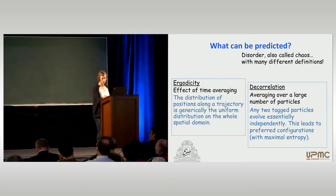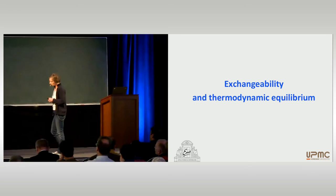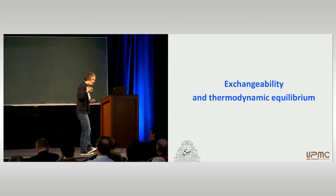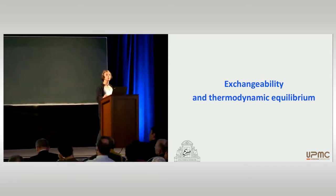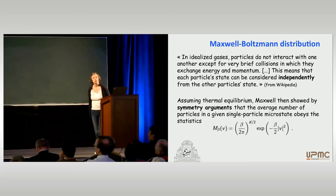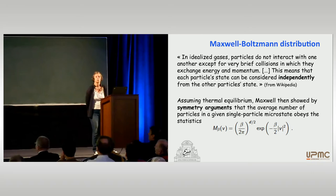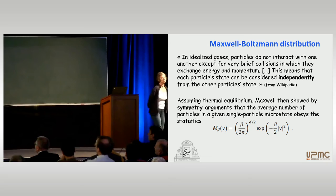The first thing to look at is probably the case of a system which is at equilibrium, which should be simpler than the general case where you have some evolution. I took this property from Wikipedia: if you look at what is the Maxwell-Boltzmann distribution, what is expected for the distribution of particles at equilibrium, you can read this sentence.